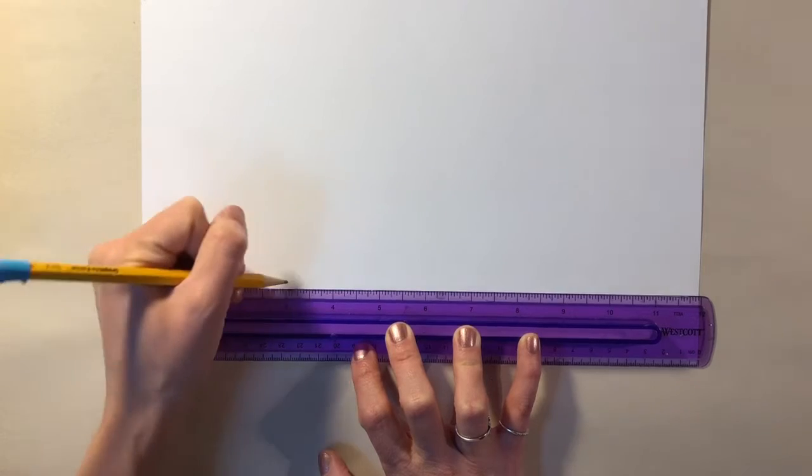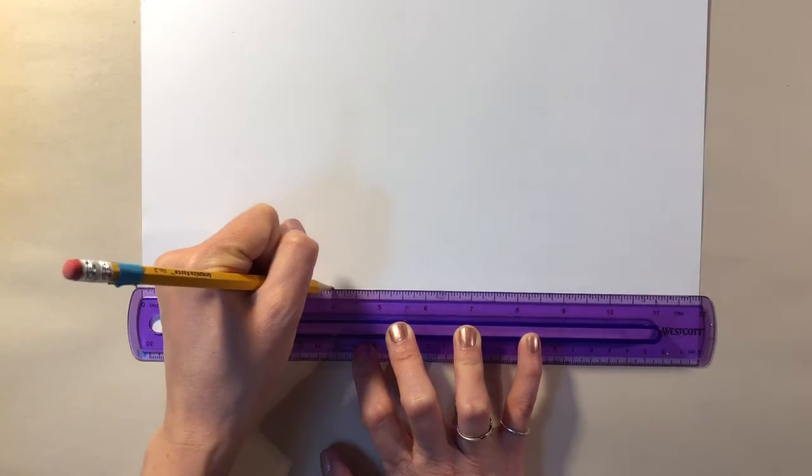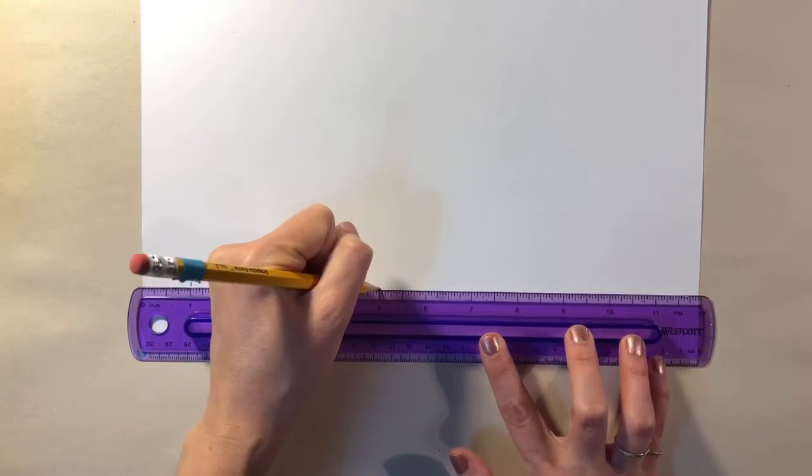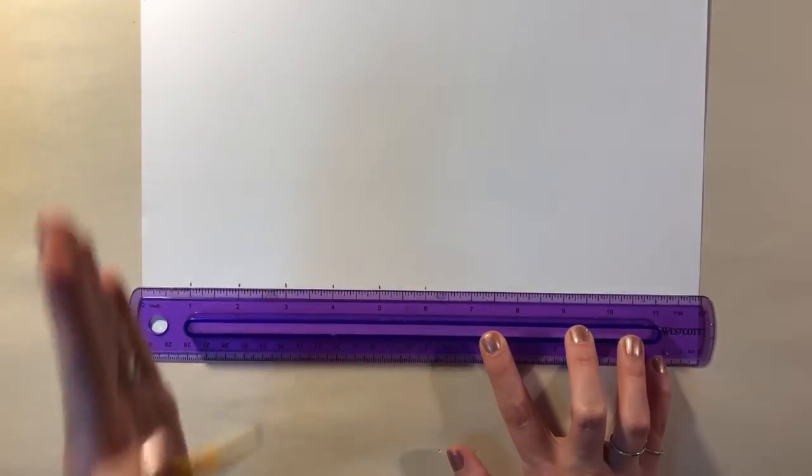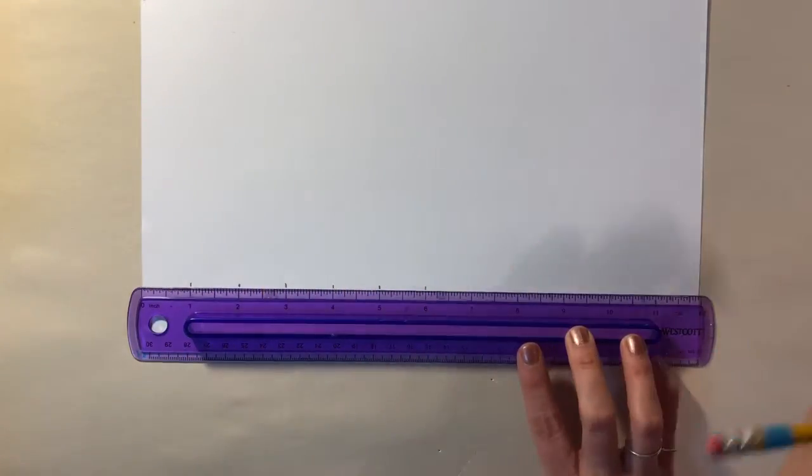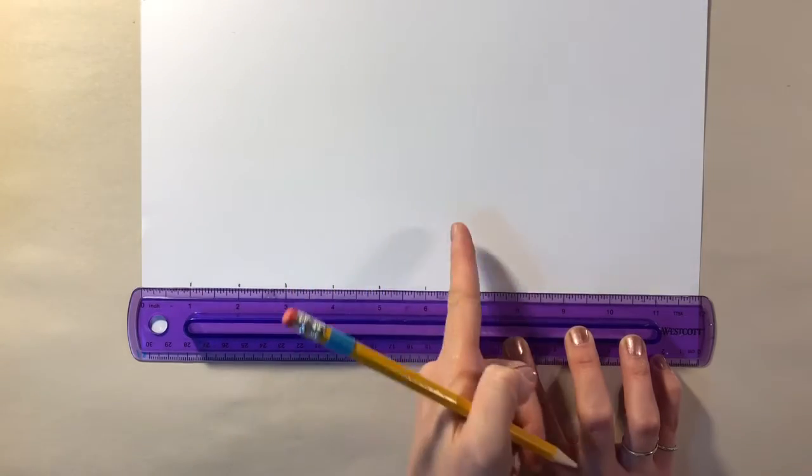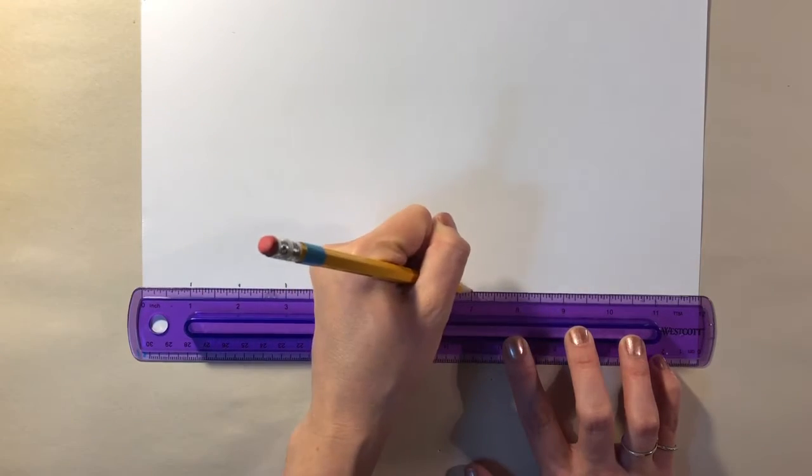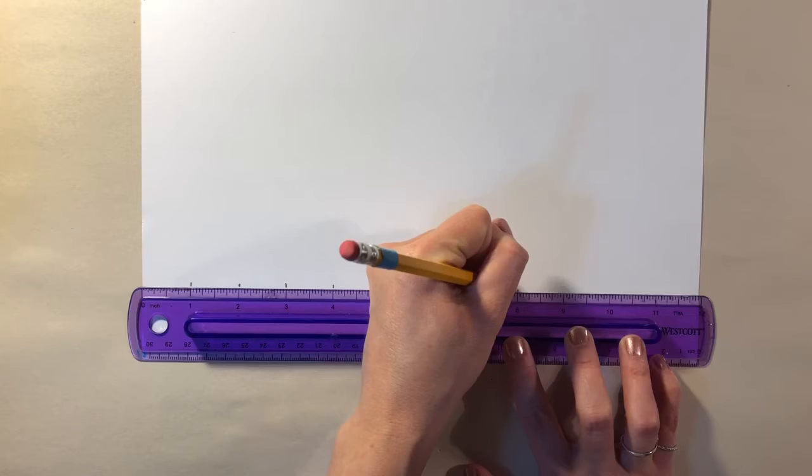Make a tick mark at every one inch across the page. One trick that helps me do this well is to make sure that I move my head along the ruler where I'm looking directly above the part that I'm making a tick mark.